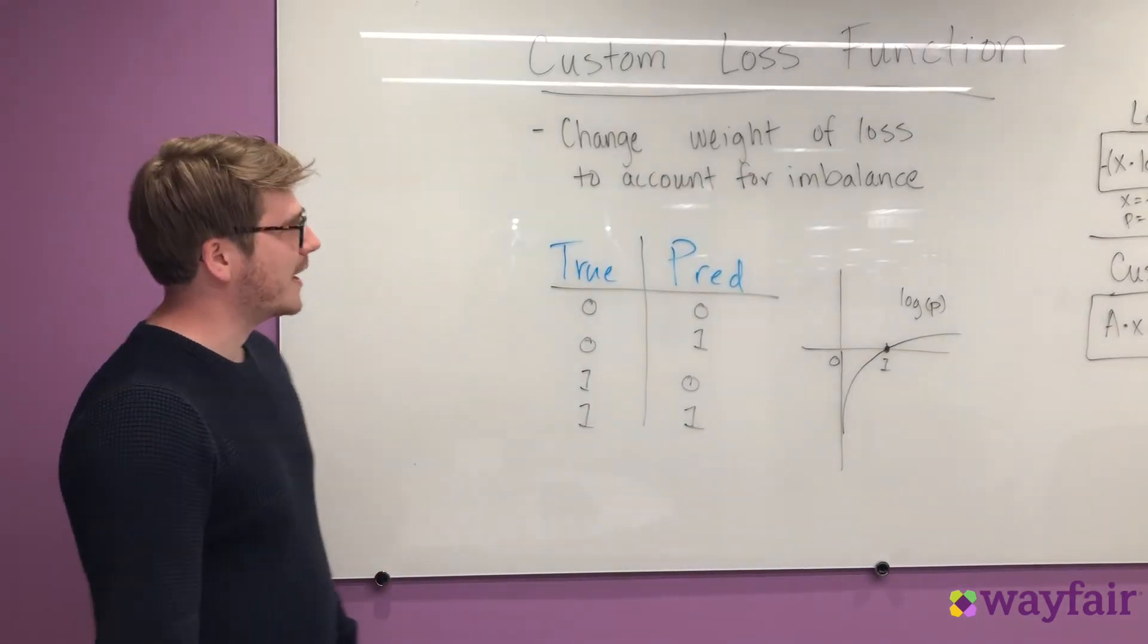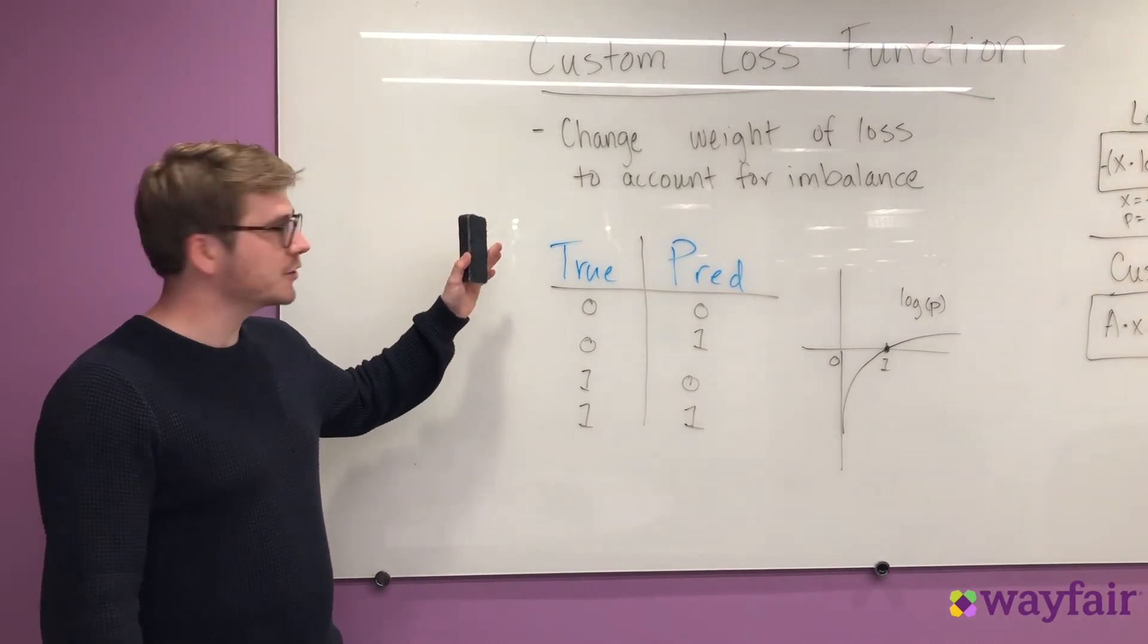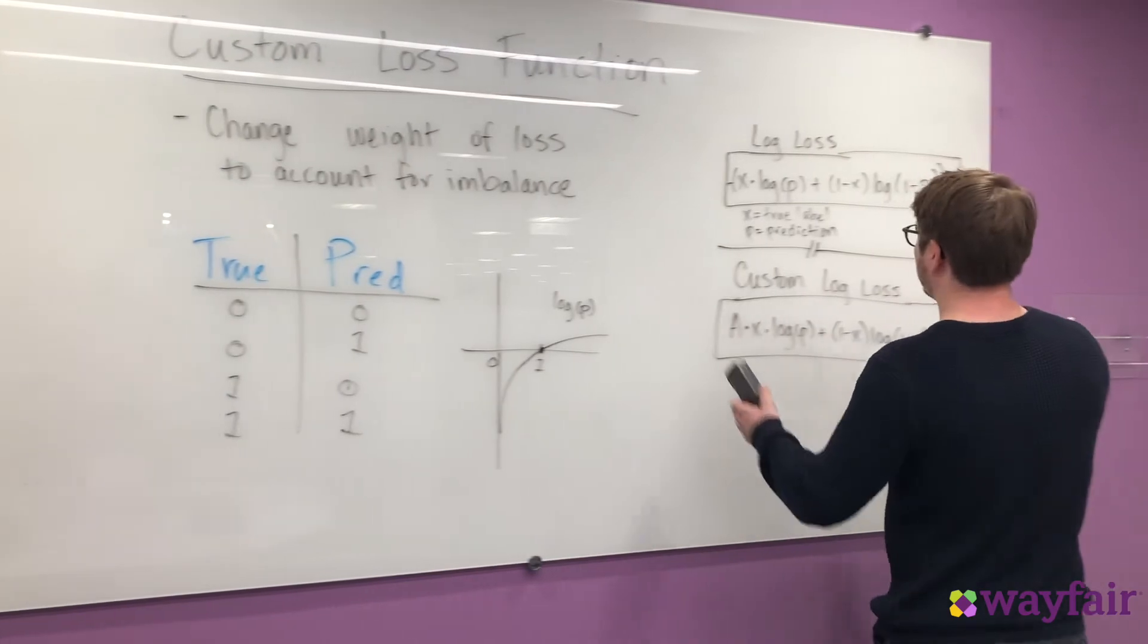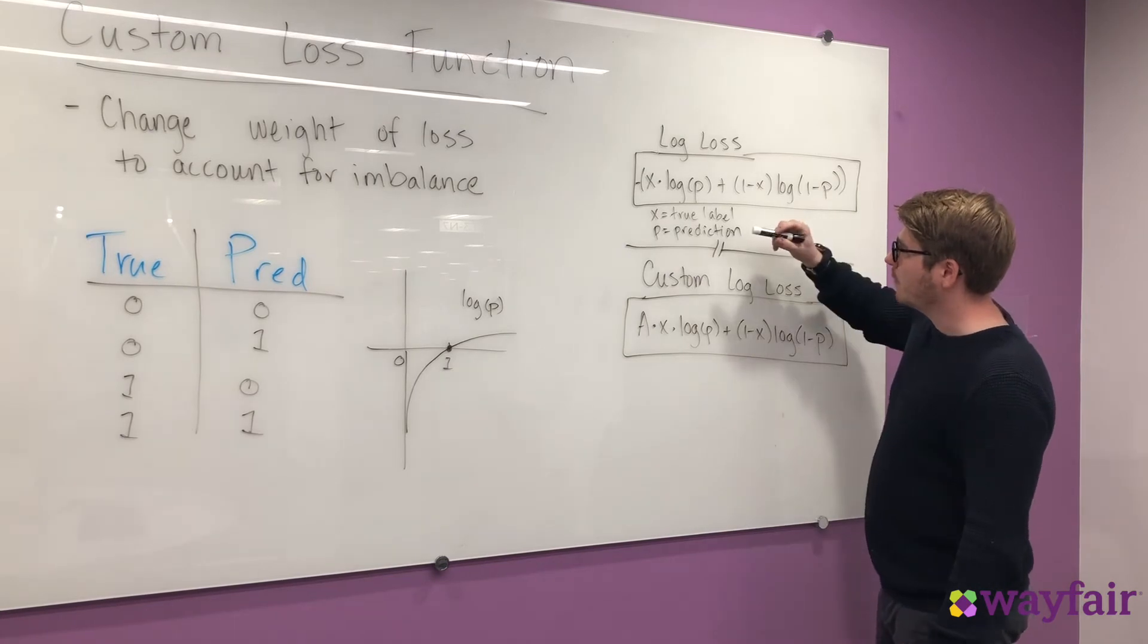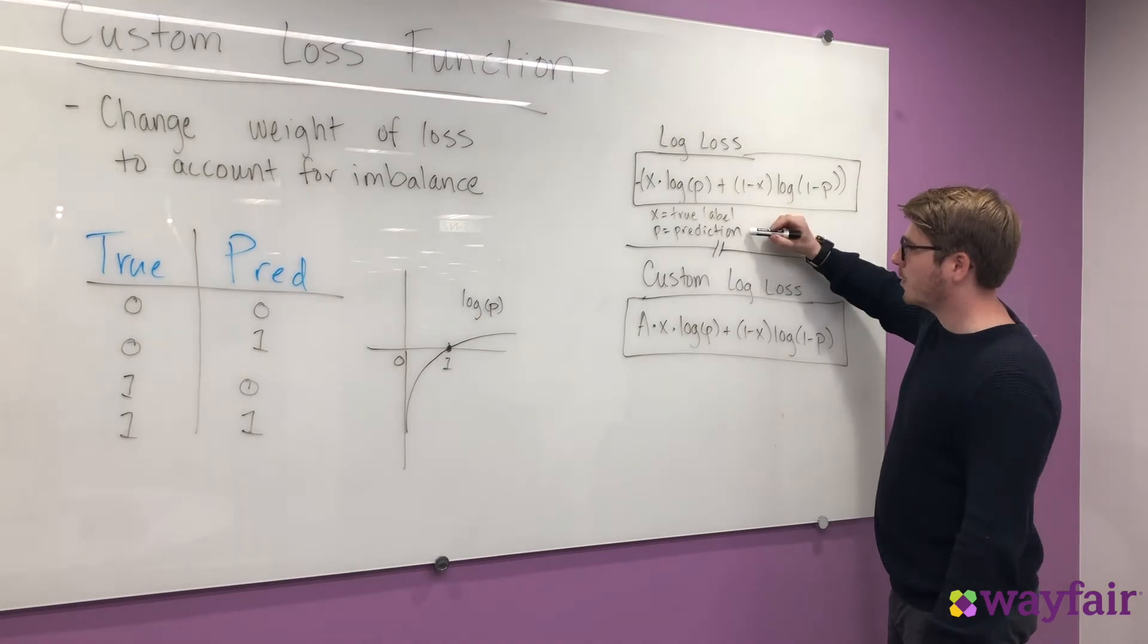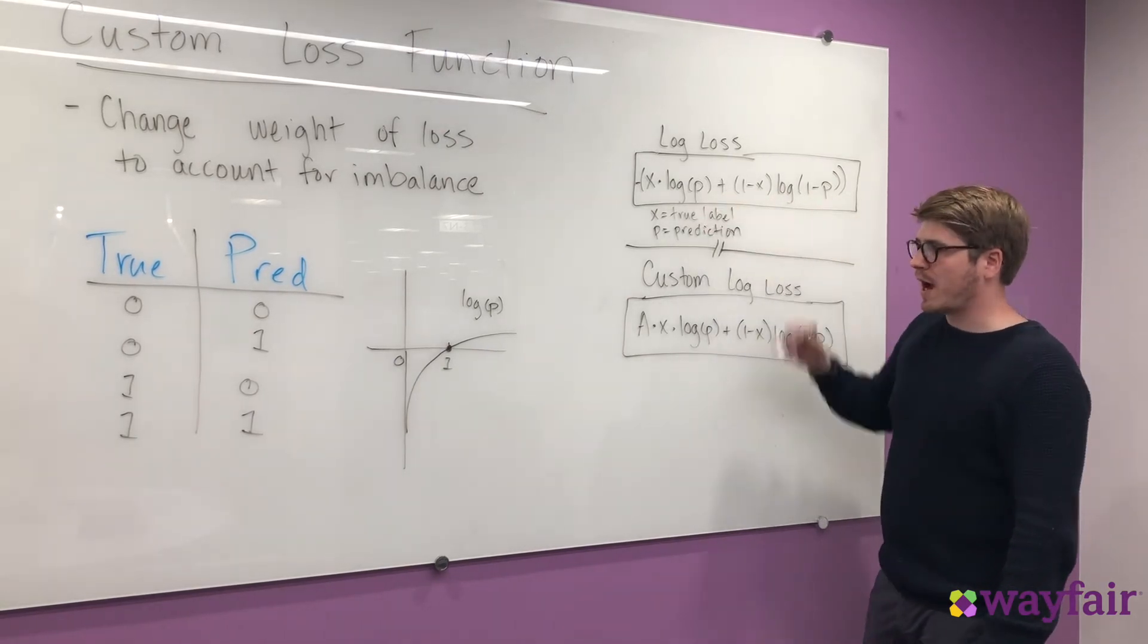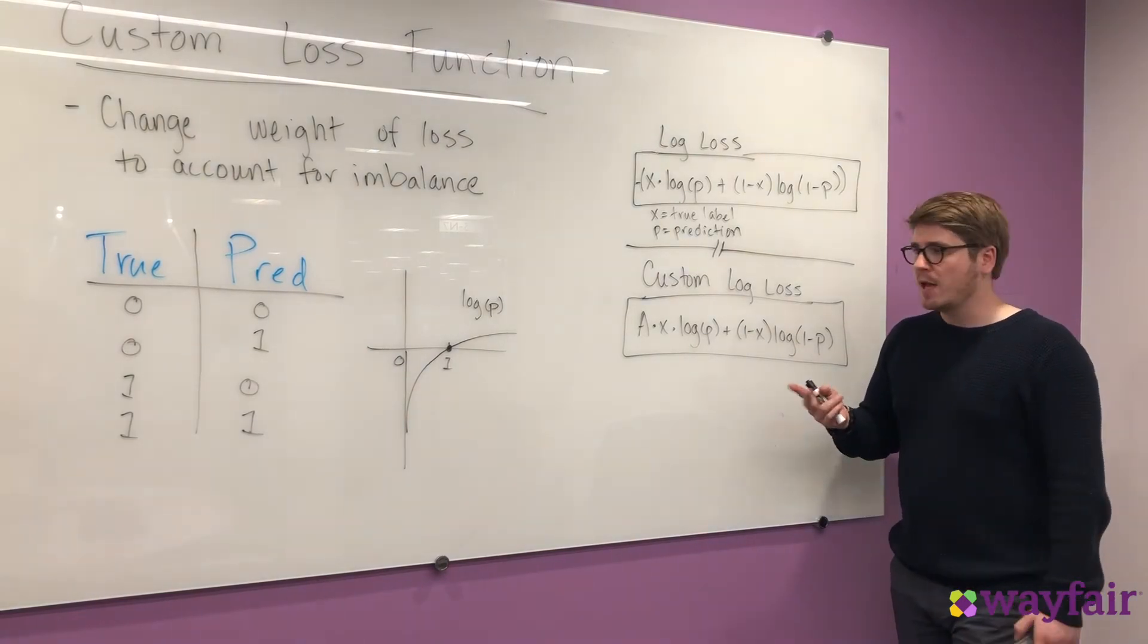The last way we're going to talk about handling imbalanced data is through a custom loss function. This is essentially when we change the weights in our loss function to account for the imbalance of data. The easiest way to understand this is through a log loss function. So if we look at a normal log loss function, we're taking negative one times this whole value, where this whole value is defined as x, which is our true label, times log of p, where p is our prediction. And then we're adding to that 1 minus x times log of 1 minus p. And I find that it's easiest to understand the intuition behind this formula when we actually walk through different examples of the true label and our predicted label.